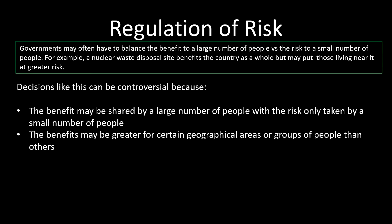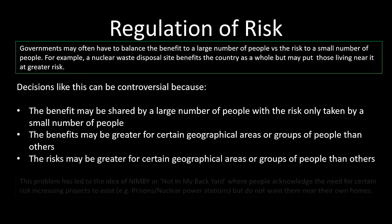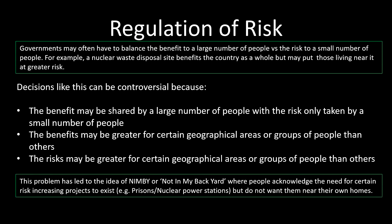Certain areas or groups of people in society might get more benefit than others, and certain people might take on more of the risk — which is why these decisions seem unfair and are almost impossible to make completely fair. You might have heard the term NIMBY — Not In My Backyard — where people acknowledge that there have to be some risk-increasing projects like prisons or nuclear power stations, but they don't want them near their own homes. That's a brief overview of risk — make sure you remember it if you get asked about it in the exam.